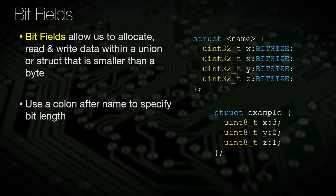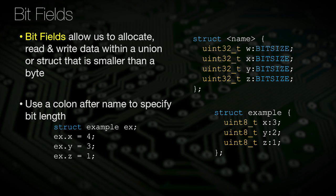Here's an example where we declare a structure with bitfields x, y, and z, with respective bit sizes of 3, 2, and 1 bits. We can declare an instance of these structures and assign values to these bitfields. Here we have assigned the values 4, 3, and 1 to the structure members using the dot operator.